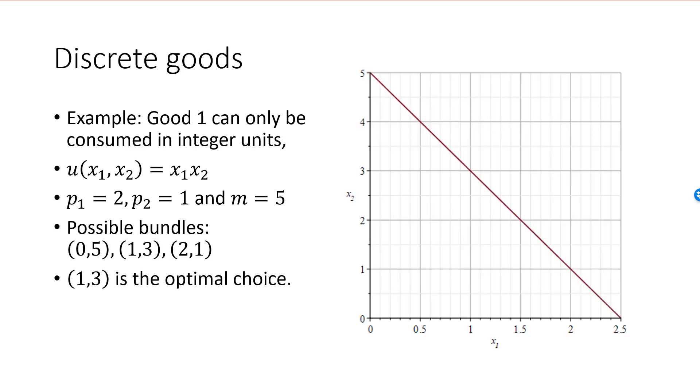Here is a graph. The red line is the budget line if both goods were infinitely divisible. Since they are not, only 3 bundles are available. This one with utility 0, this one with utility 3, and this one with utility 2.